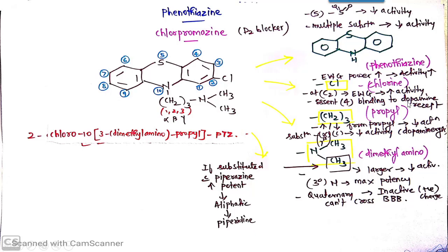Along with increase in activity, it is also essential for binding to the receptor, that is dopaminergic receptor, dopamine receptor. Then this CH2 thrice, so this is propyl. Increase or decrease from propyl, that means decreasing the number of carbons to ethyl-methyl or increasing to butyl, pentyl, etc., will decrease the activity.